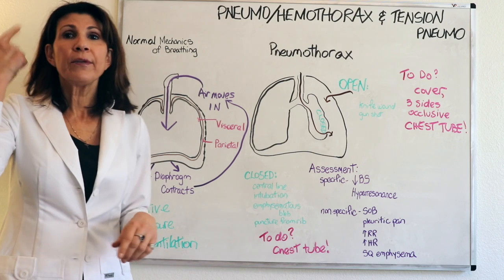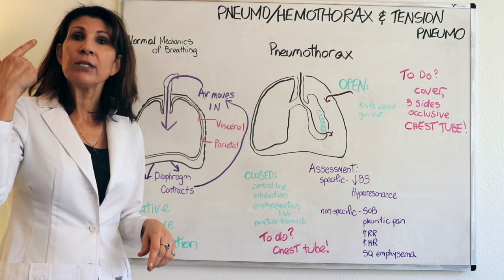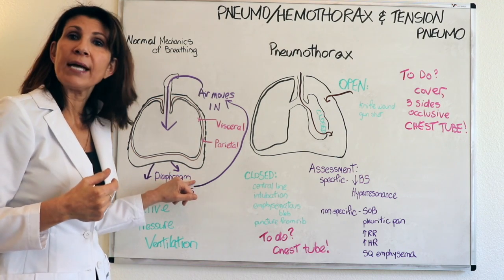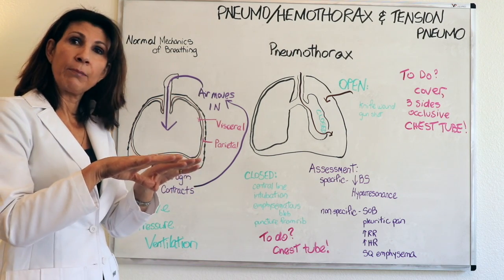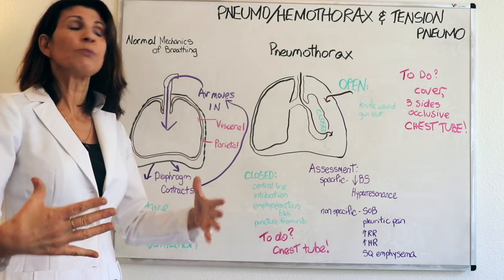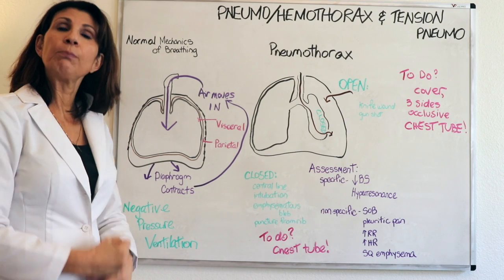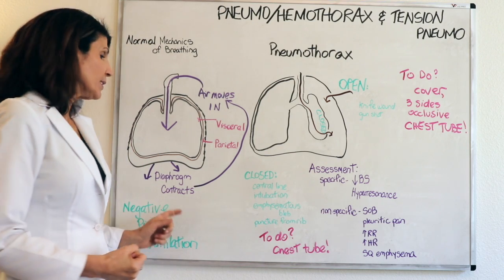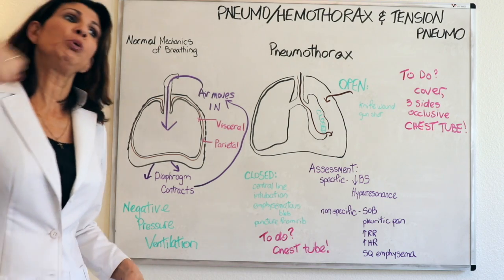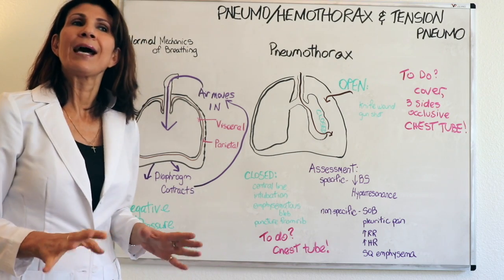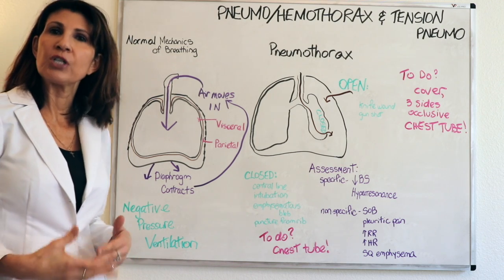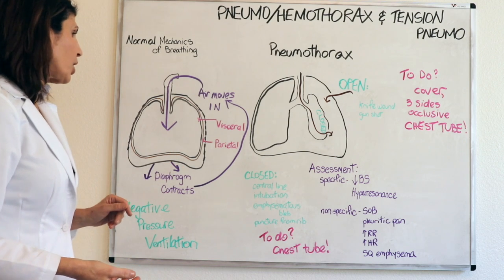When there's a signal in the brain to ventilate, that signal is passed down to the diaphragm. The diaphragm contracts down, the external intercostals move out, and air is actually pulled into the airway. That's negative pressure ventilation, as opposed to positive pressure ventilation where air is pushed into the airway — that's not physiologic, unlike what we do in the acute care setting with positive pressure ventilators. This normal breathing is physiologic.